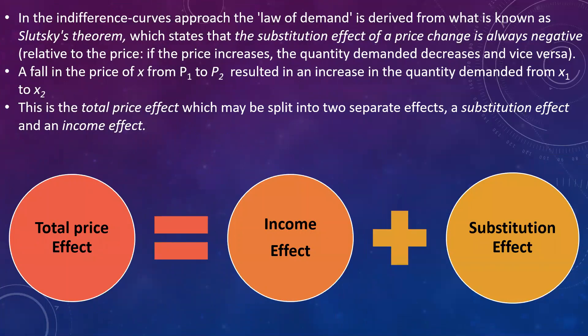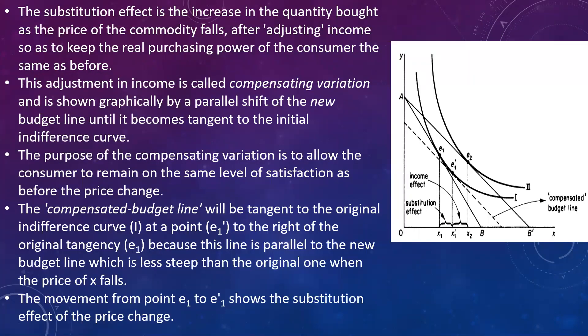This total effect of price change is split into two separate effects: one is the substitution effect and another is the income effect. The substitution effect is the increase in quantity purchased as the price of a commodity falls after adjusting the income, so as to keep the real purchasing power of the consumer the same as before. This adjustment in income is called compensating variation, and graphically it is shown by a parallel shift of the new budget line until it becomes tangent to the initial indifference curve.